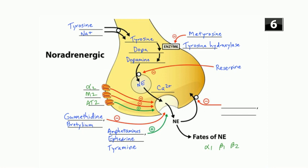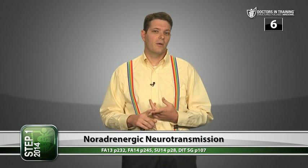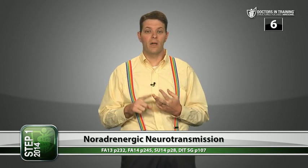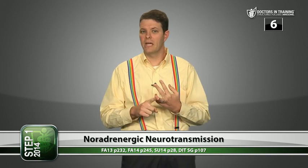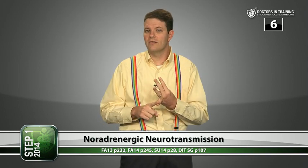The third fate of norepinephrine is reuptake back into the presynaptic cell. Cocaine and tricyclic antidepressants (TCAs) both inhibit norepinephrine reuptake. Understanding this explains why cocaine makes the heart race and raises blood pressure, why we give TCAs or amphetamines to certain patients, and why tyramine can cause hypertensive crisis in patients on certain medications.